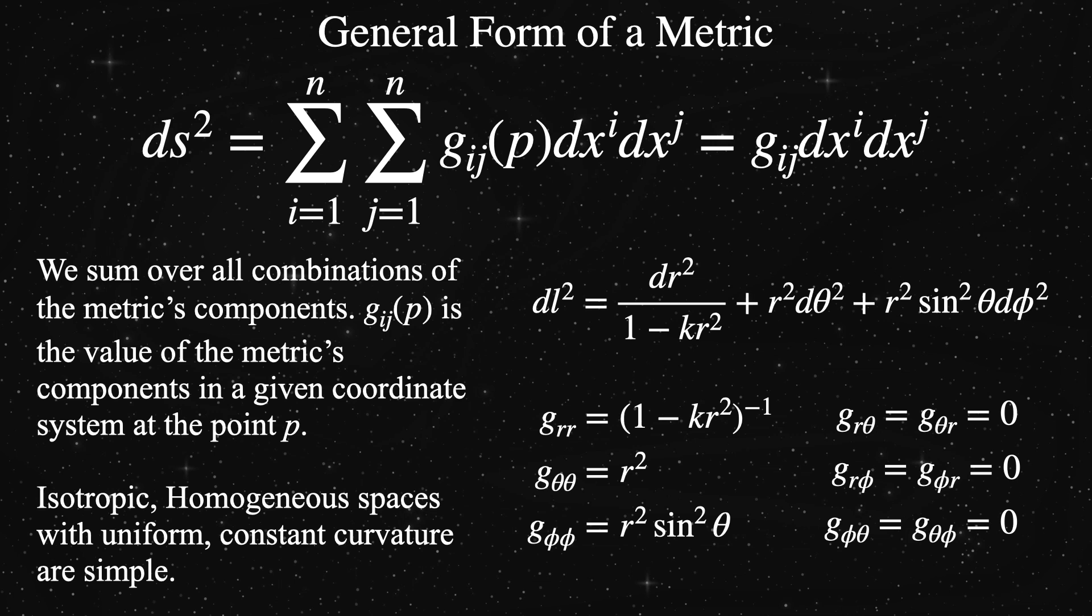Here, in this particular metric, there are only three components. We could have had 9, owing to the double summation over i and j from 1 to 3 each, but we don't have any cross products of phi, theta, or little r. We only have their squares. As you can see, 6 of the 9 possible metric components are exactly 0.